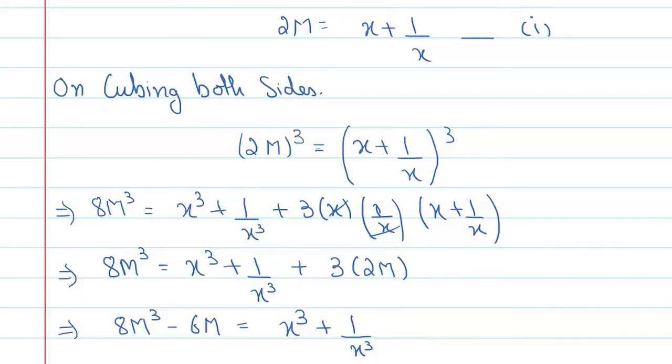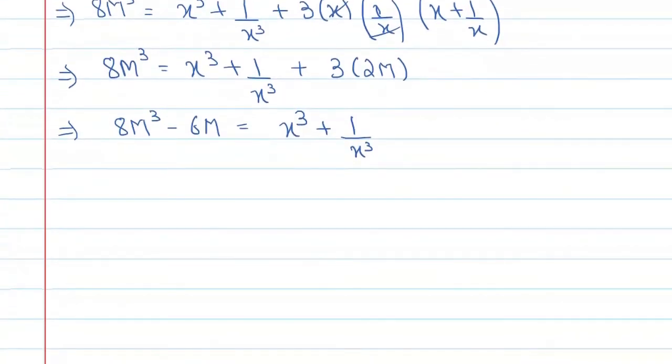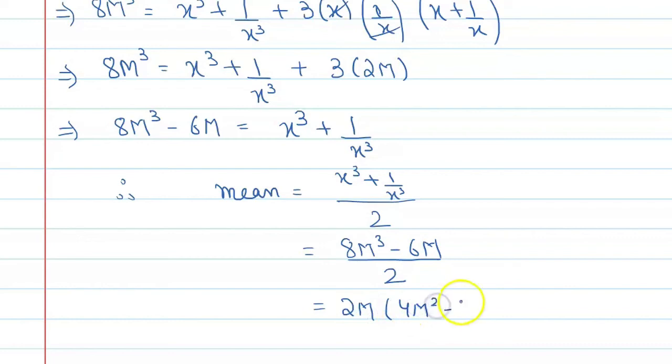So we have the sum, and if we need to find the mean, we have to do sum of observations divided by number of observations. Therefore, mean is equal to x cubed plus 1 by x cubed, and these two observations are number of 2. Put this value here. You can say 8M cubed minus 6M divided by 2. Alright. Now, what do we do here? You can take 2M common. Okay. When you take 2M common, the value will be 4M square minus 3 upon 2. So this and this will get cancelled. Okay. And this value will become M into 4M square minus 3.